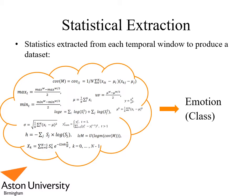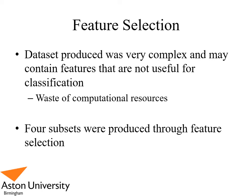Each of these statistics for the time windows are then labelled to the nominal emotion, which forms a dataset with very high dimensionality. The dataset produced had over two and a half thousand dimensions and thus would be extremely intensive to classify, possibly even wasting computational resources. For this reason we performed feature selection to reduce the dataset.